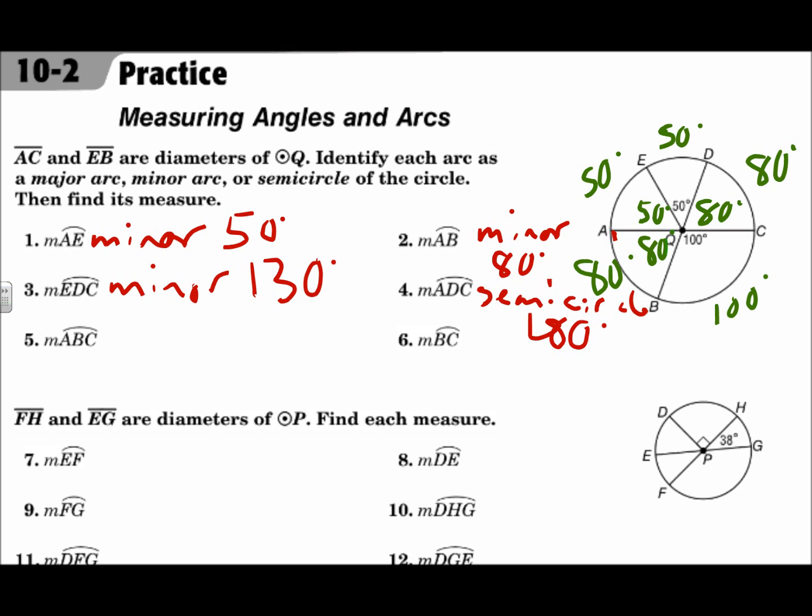Arc ABC, that's another semicircle on the bottom half, 180 degrees. And arc BC, that's less than halfway around, so that's a minor arc, and its measure is 100 degrees.